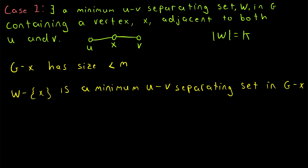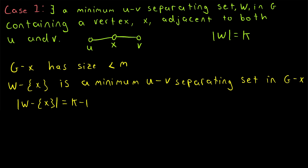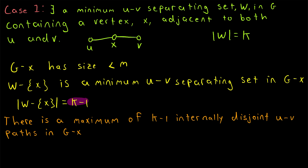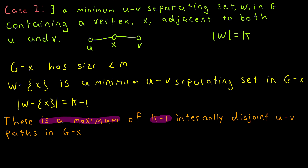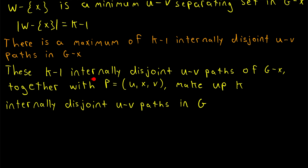The cardinality of W minus X is K minus 1, because W has K vertices and we've removed one element. Then we apply our induction hypothesis to G minus X, which tells us that since there are K minus 1 vertices in a minimum u-v separating set in G minus X, there is a maximum of K minus 1 internally disjoint u-v paths in G minus X. These K minus 1 internally disjoint u-v paths of G minus X, together with the path P going from u to X to v, make up K internally disjoint u-v paths in the original graph G.